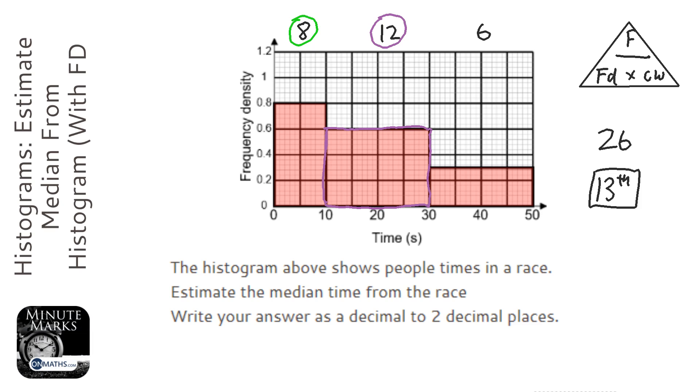Next step, I'm looking for the 13th value. The first 8 are used up in the first bar here. So if I take away 8 from that, that leaves me with 5. So I'm looking for the 5th value in that second bar.